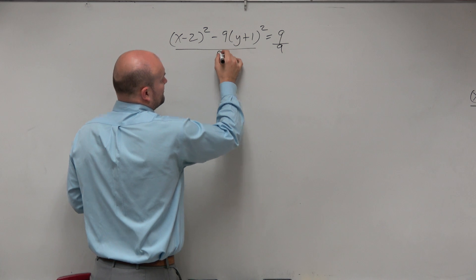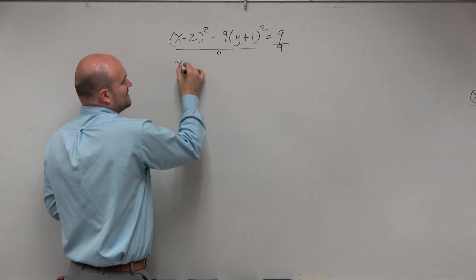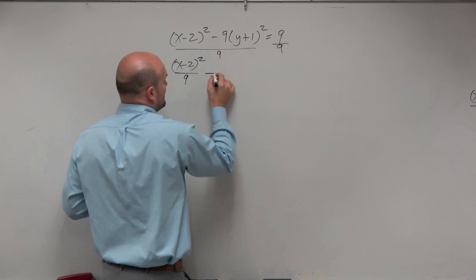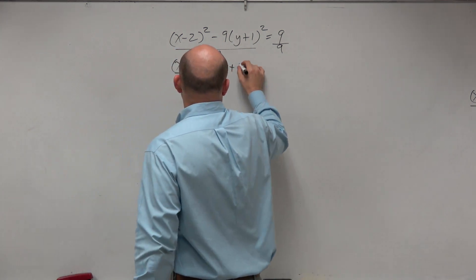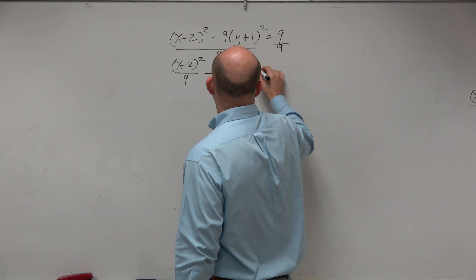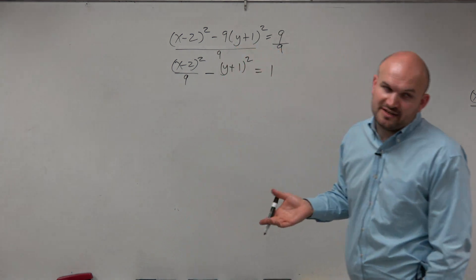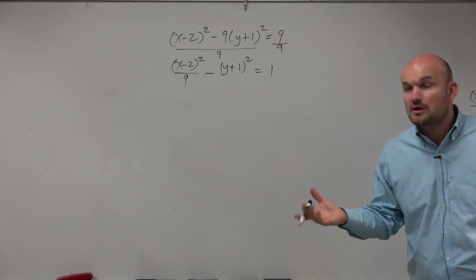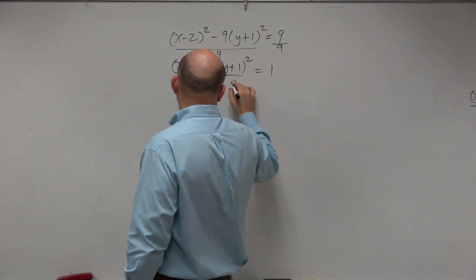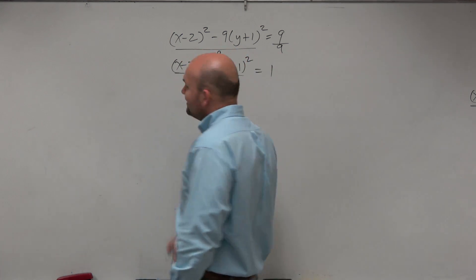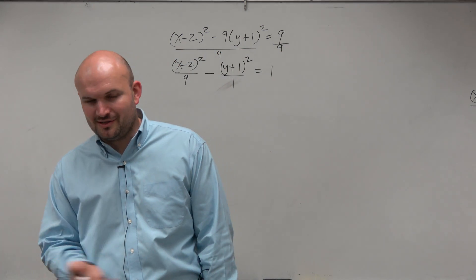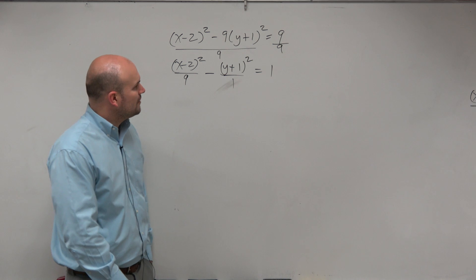So my first step in this example is to divide by 9. Therefore, I obtain (x-2)² over 9. 9 divided by 9 is going to be 1. Now, if I don't have a denominator, can I just use a denominator? Should I use 0? I need to use 1, right? Don't want to put a 0 there, because obviously, dividing by 0 would be undefined, and that's not going to make sense.